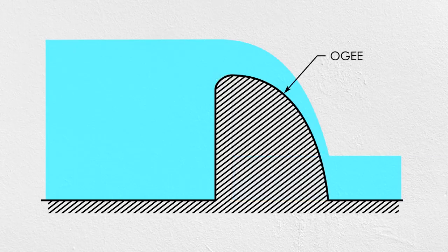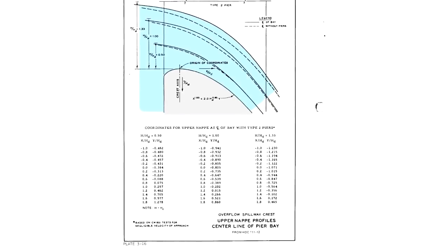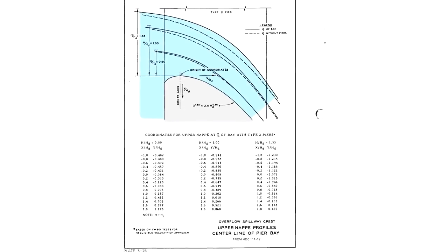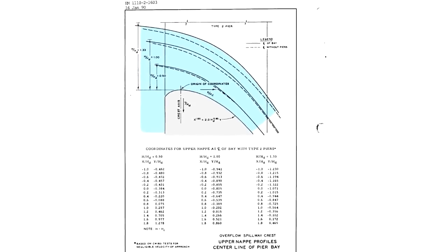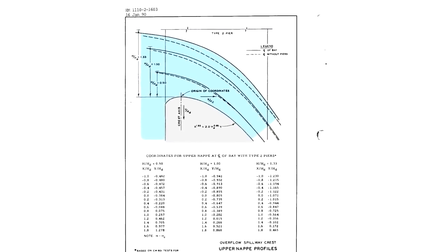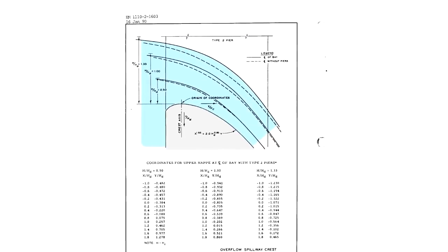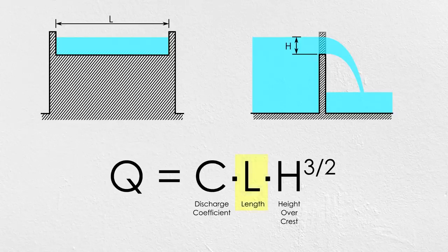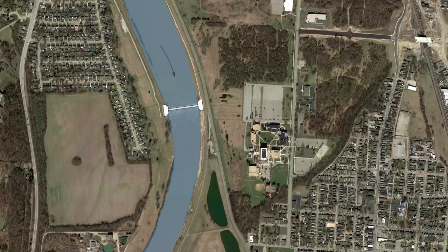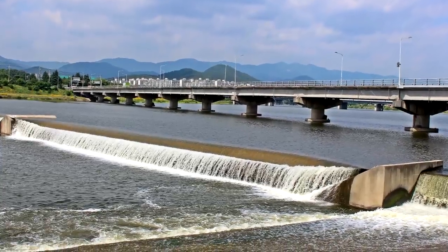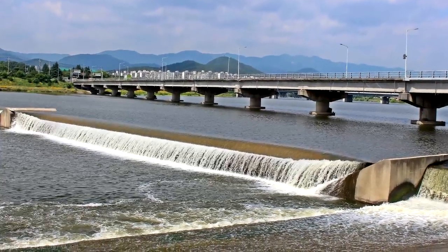The shape that matches the nappe is called an OG. With OG crested weirs, we can get discharge coefficients as high as around 4, but that's pretty much the limit. The other parameter we can change is the length of the weir, but in many locations the available footprint for the weir is a fixed size that can't be increased. Even if the footprint isn't fixed, increasing the length of the weir can add significant costs.